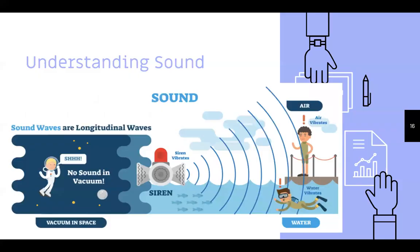Understanding sound better: sound waves are longitudinal waves. There is no sound in a vacuum. Going back to the siren example — sirens echo outwards and you can hear them through air; you can hear sound through water too, but it's much harder.